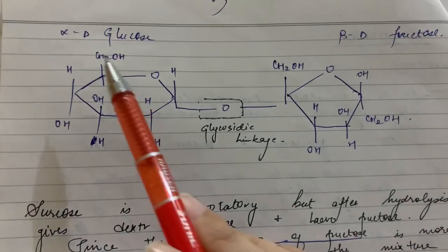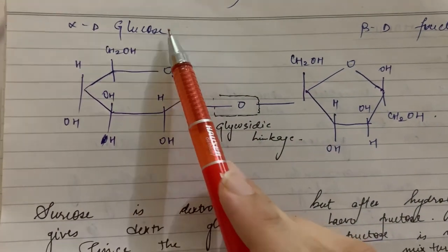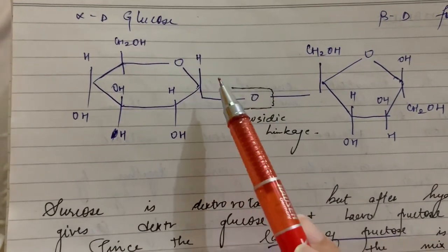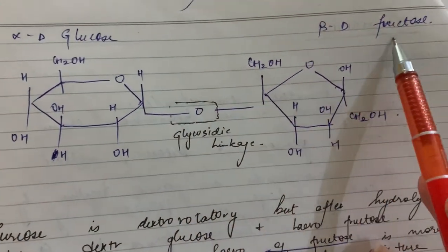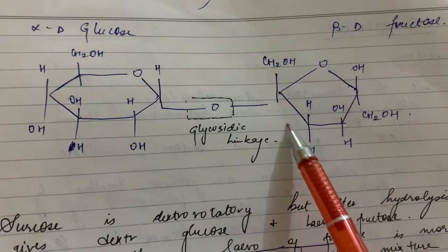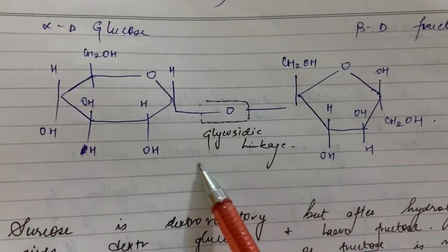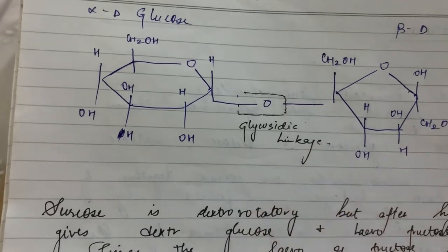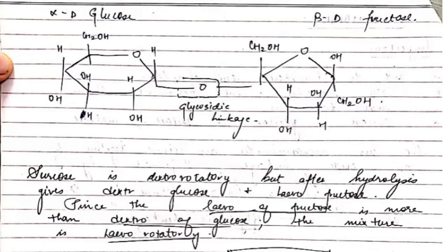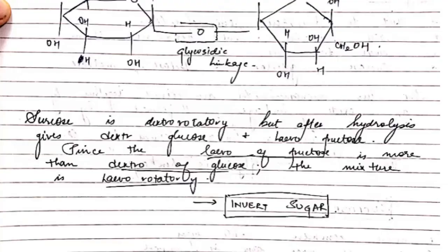First, we draw the structure of alpha-D-glucose, which has a hydroxyl group at the top sharing with oxygen. Next, we draw beta-D-fructose, which also has an OH group. The two OH groups are shared, meaning loss of water, and this forms a glycosidic linkage. Sucrose is dextrorotatory, but after hydrolysis it gives dextro glucose and levo fructose. Since the levo fructose is more than dextro glucose, the mixture is levorotatory, also called invert sugar.